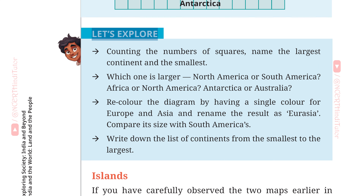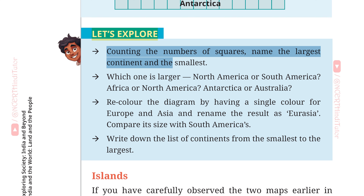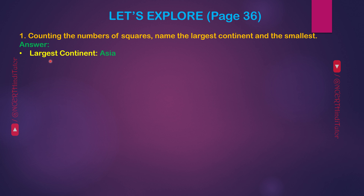Let's Explore, Page 36. Question 1: Counting the number of squares — name the largest continent and the smallest. Answer: largest continent — Asia; smallest continent — Australia.